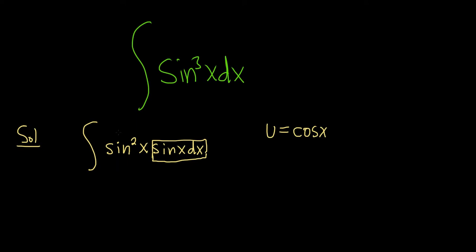So now we look here and say, hey, this is not a cosine, right? So we make it a cosine by using an identity. So sine squared is always 1 minus the other one squared, so 1 minus cosine squared. And here we have sine x dx.